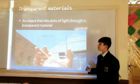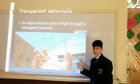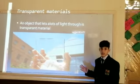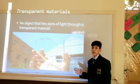Transparent material. An object that lets light pass through is transparent material. You can see the glass, it can pass light through glass.